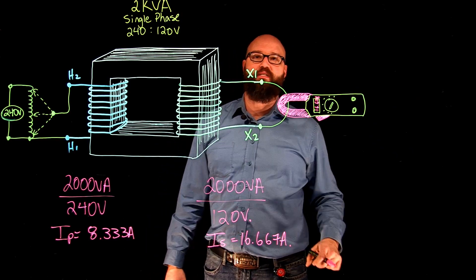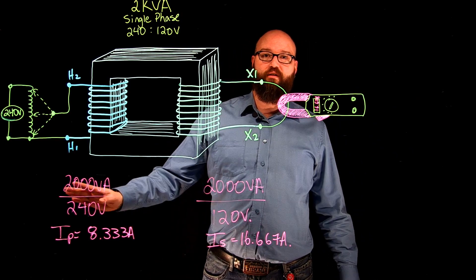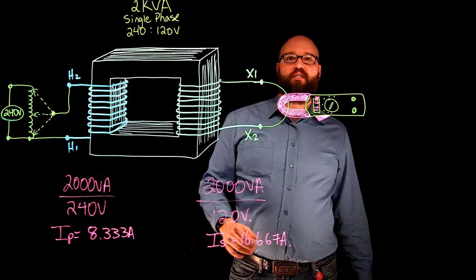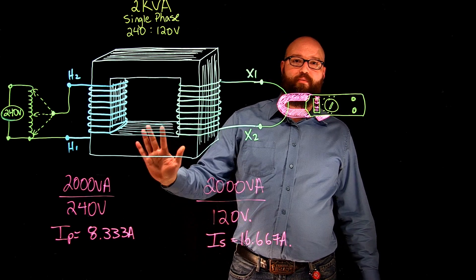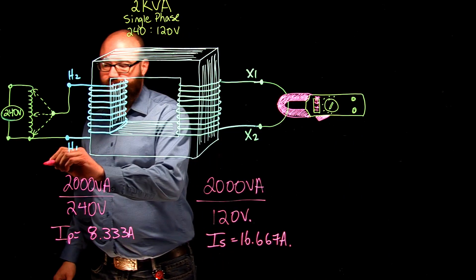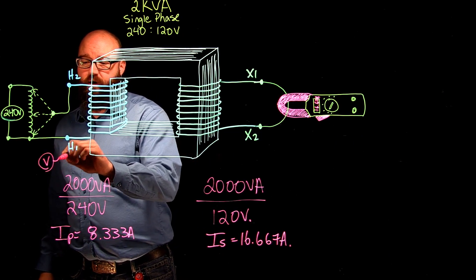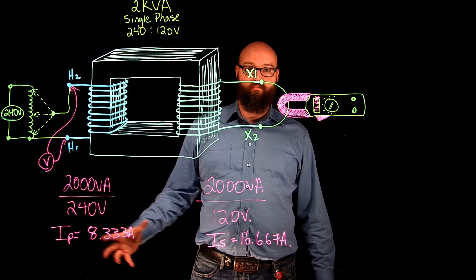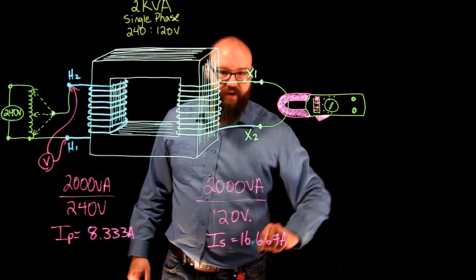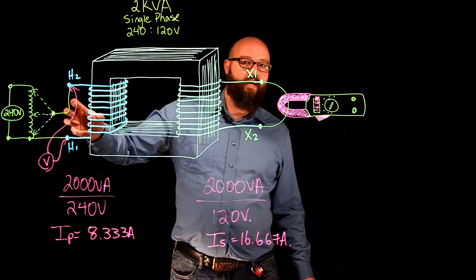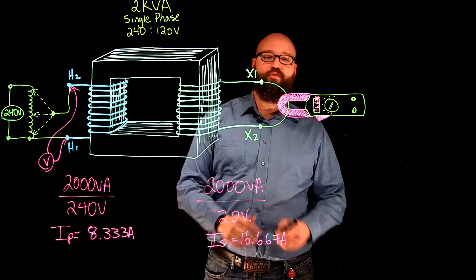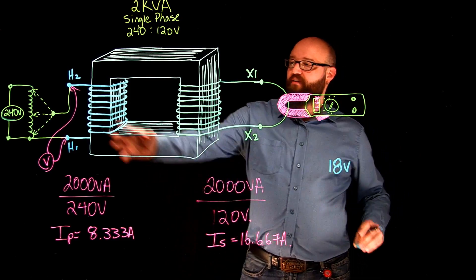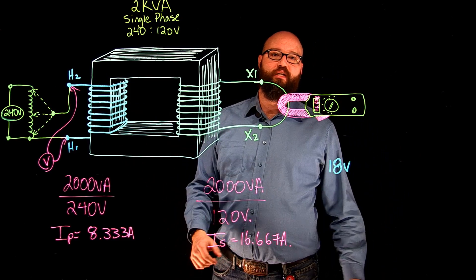Once we see that 16.67 amps, it's not going to take a lot of voltage to do that because this is nearly zero impedance here. Once we see that 16.67 amps — our rated secondary current — we stop. We get a voltmeter and check what voltage is currently applied to the primary of the circuit and record that down. Let's say we keep cranking it up and we hit around 18 volts when we see 16.67 amps.